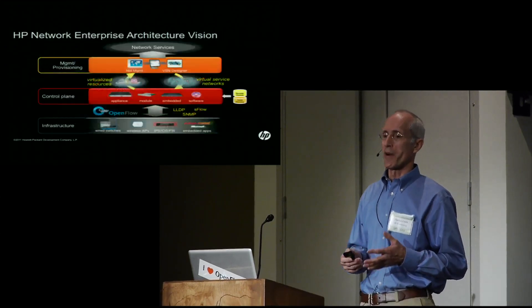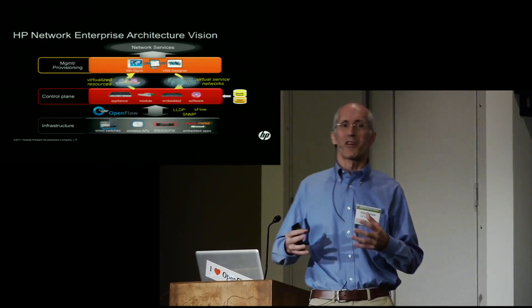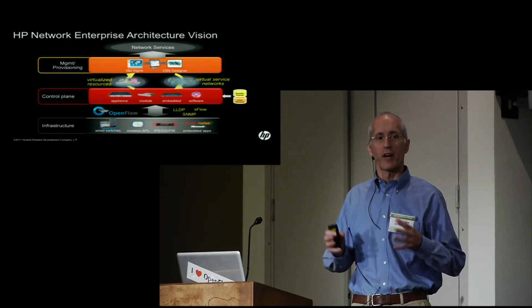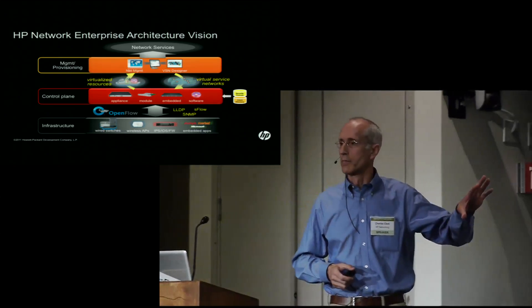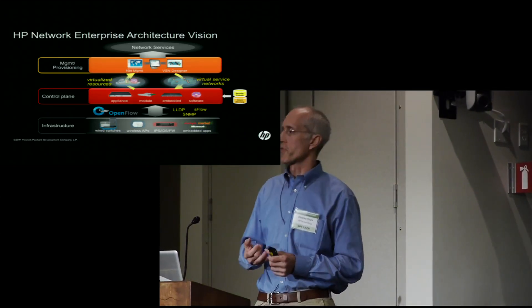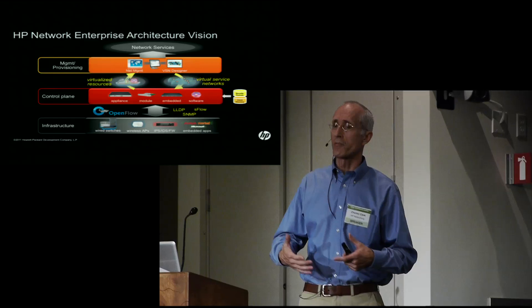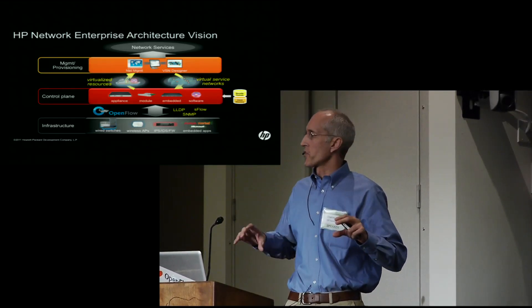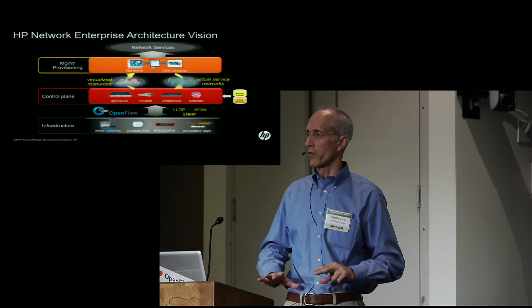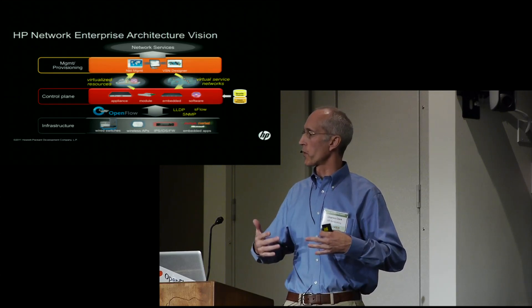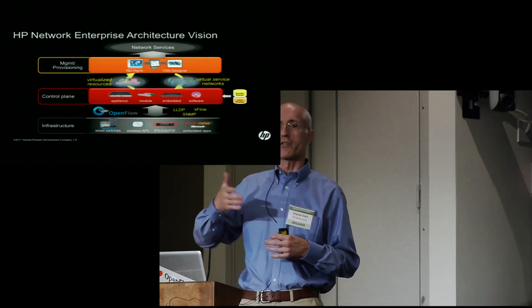What we've done is create an architecture — and you'll actually see some similarities to other ideas presented earlier in the day, because I think there are a lot of minds thinking similar things here. This architecture has an infrastructure layer at the bottom: the switches, routers, access points, security and application services. A control plane in the center whose purpose is to abstract or virtualize that underlying infrastructure and present up a virtual network upon which virtual service networks run on top.